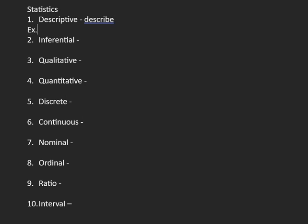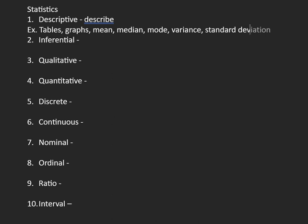In descriptive statistics, some examples are tables, graphs, and measures of central tendency — the mean, median, and mode. You can also add variance, standard deviation, and others. All we need to do in descriptive is to describe our data. For example, the mean of my data would be 70, or there are 10 males and 5 females — you're just describing.